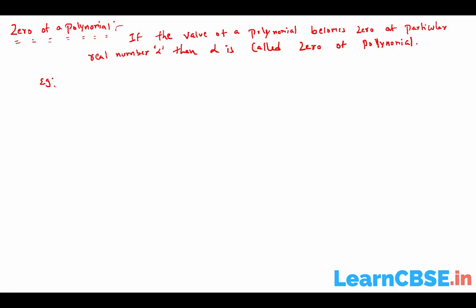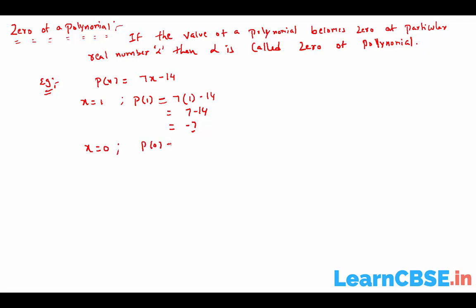Let's understand by example. Take the polynomial 7X minus 14. If you take X equal to 1: P of 1 equals 7 into 1 minus 14, which is 7 minus 14 equals minus 7. If X equals 0: P of 0 equals 7 into 0 minus 14, which is 0 minus 14 equals minus 14. If X equals 2: P of 2 equals 7 into 2 minus 14, which is 14 minus 14 equals 0.